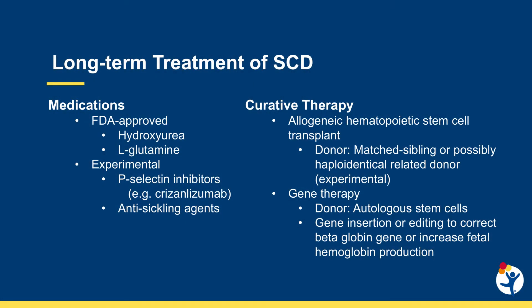Hydroxyurea has been shown to increase fetal hemoglobin, which disrupts polymerization of sickle hemoglobin and decreases red cell sickling. Patients taking hydroxyurea have decreased rates of vaso-occlusive pain crises and acute chest syndrome. They also have an increase in their hemoglobin and require fewer transfusions of red blood cells during their lifetime. While we have used this treatment for decades, FDA approval for use in pediatric patients was only granted in December 2017.